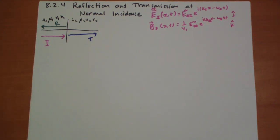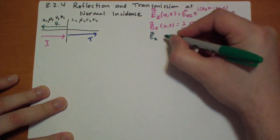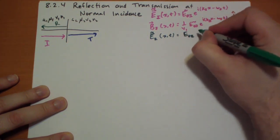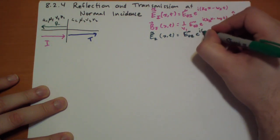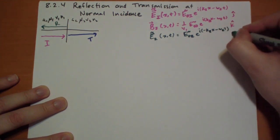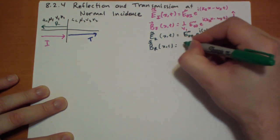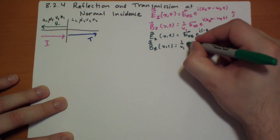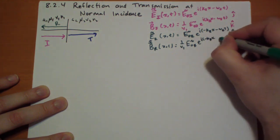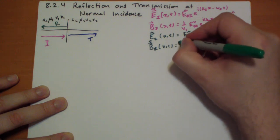The reflected wave is traveling backwards so it's going to have a minus sign in there. It's E naught r complex e to the i minus kappa r x minus omega r t in the j hat direction. And the B field is pretty much the same except for that constant of V1, E naught r complex e to the i minus kappa r x minus omega r t in the minus k hat direction, because it has to be pointing that direction to satisfy the wave equation.